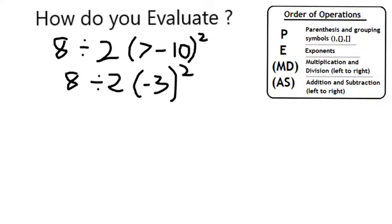I left the parentheses around the negative 3, but that's really just to space it out. So this is going to be an applied multiplication, and here I have an exponent. Exponents are next on the order of operations, so I'm going to square negative 3, which is negative 3 times negative 3, or 9.